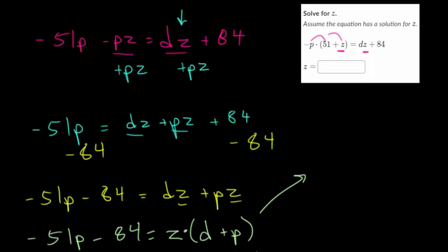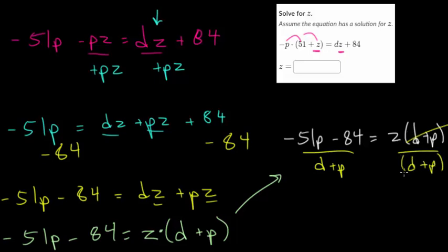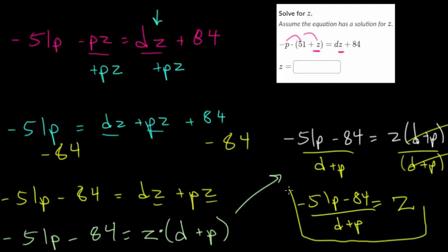And our last step is to divide by this coefficient on z. So let me just rewrite this. We got minus 51p minus 84. Let me scroll over a little. equal z times d plus p. So that's what we'll divide by on both sides by the d plus p. You could write it p plus d but I'll just keep it consistent. So d plus p on each side and we know something divided by itself is just one. So solving for z what we got is minus 51p minus 84 all divided by d plus p. So this is our final answer.